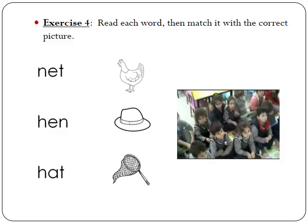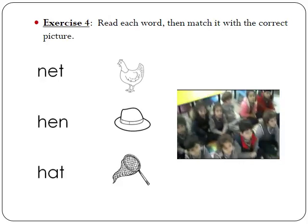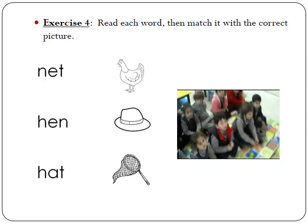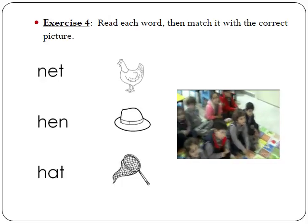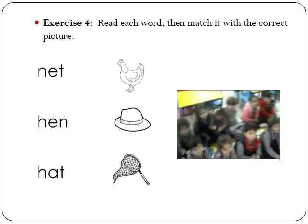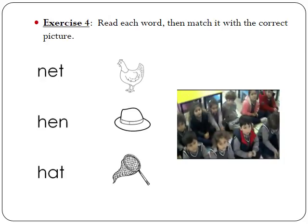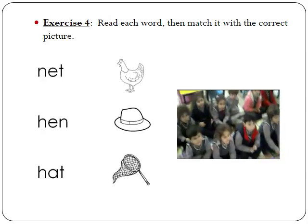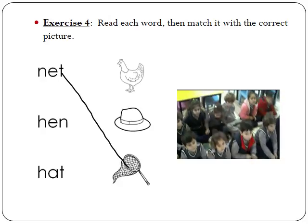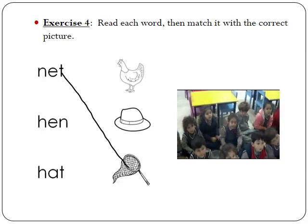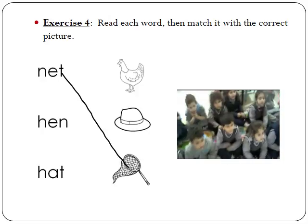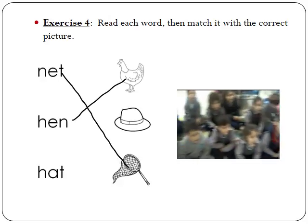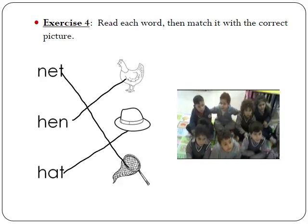Let's move to exercise number four. We have to read the words, then match them to the correct picture. What do you see in the first picture? Hand. This is a hand. What about? Hat. What's this? Net. Is it a nest or net? Net. Let's start blending the first word so that we can see to which one we should match it. Net. So I match it to the net. What about the second word? Hen. I match it to the hen. What about the last word? Hat. So this is a hat. Very good.